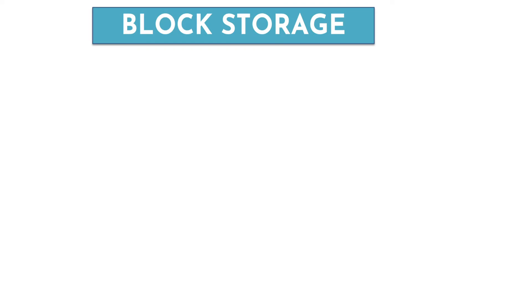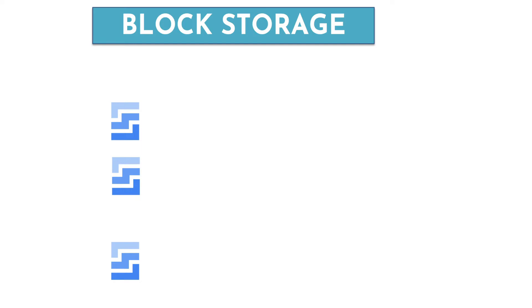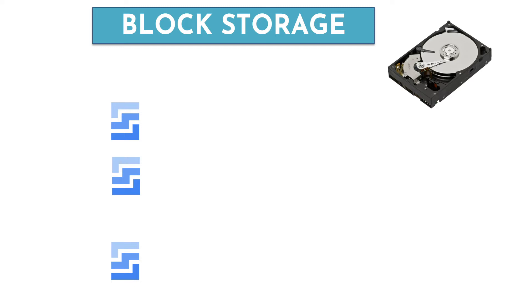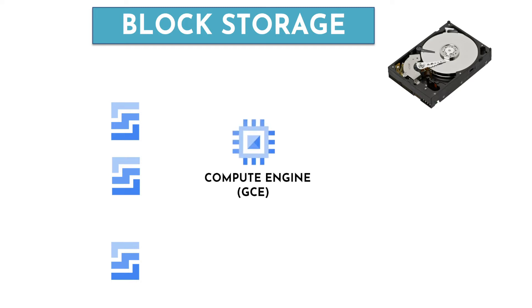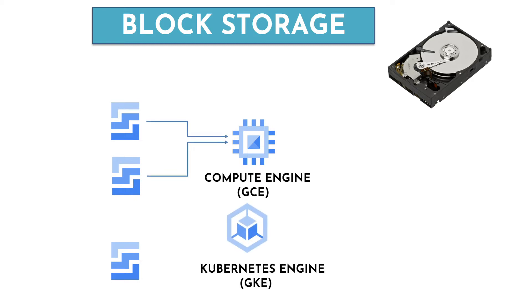A block storage is a type of storage which emulates the behavior of a physical hard drive. These data disks are stored in blocks and are attached to the compute. In Google Cloud, it means they are attached to Compute Engine or a Kubernetes Engine, which is GKE.